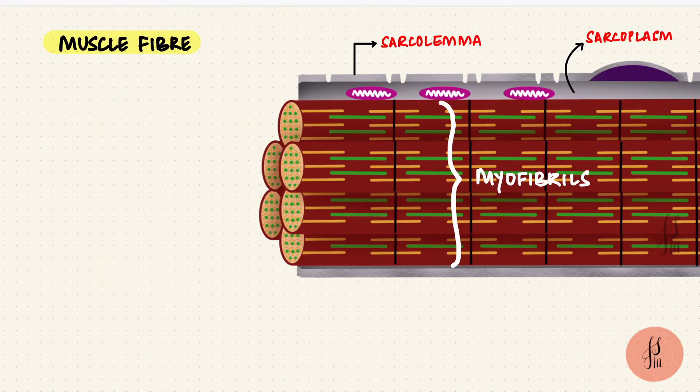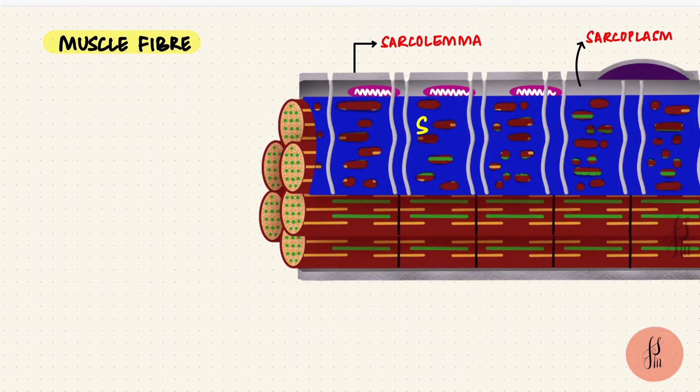If we remove the front of the sarcolemma and take a look inside the cell, in addition to those myofibrils, there are also nuclei, mitochondria, etc. But what's important is that it's got a specialized endoplasmic reticulum called a sarcoplasmic reticulum. That is where calcium is stored inside muscle cells. Calcium is what is needed for the muscle to contract.